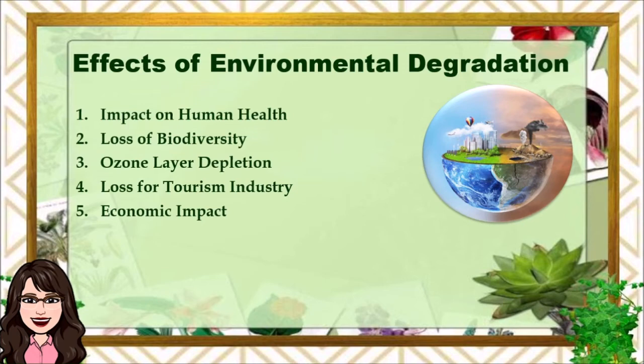Number two, loss of biodiversity. Biodiversity is important for maintaining the balance of the ecosystem through combating pollution, restoring nutrients, protecting water sources, and stabilizing climate. Deforestation, global warming, overpopulation, and pollution are a few of the major causes of loss of biodiversity.